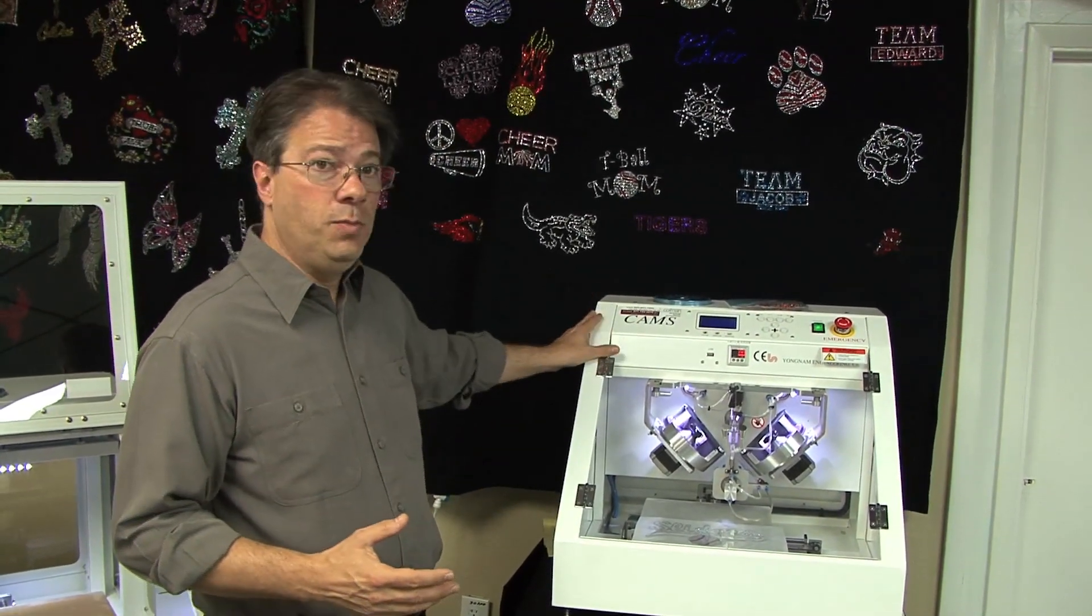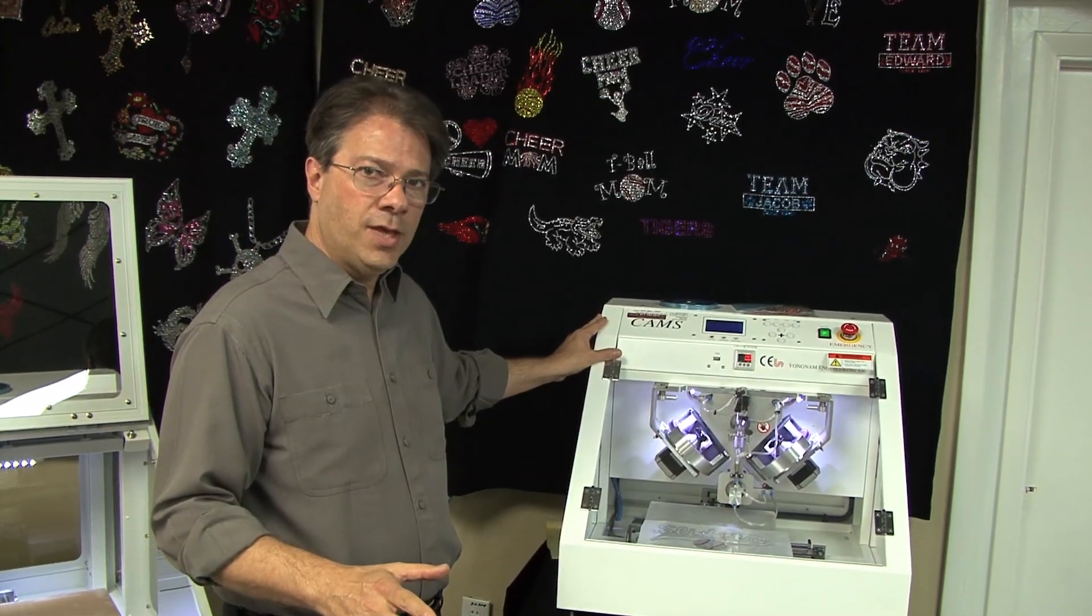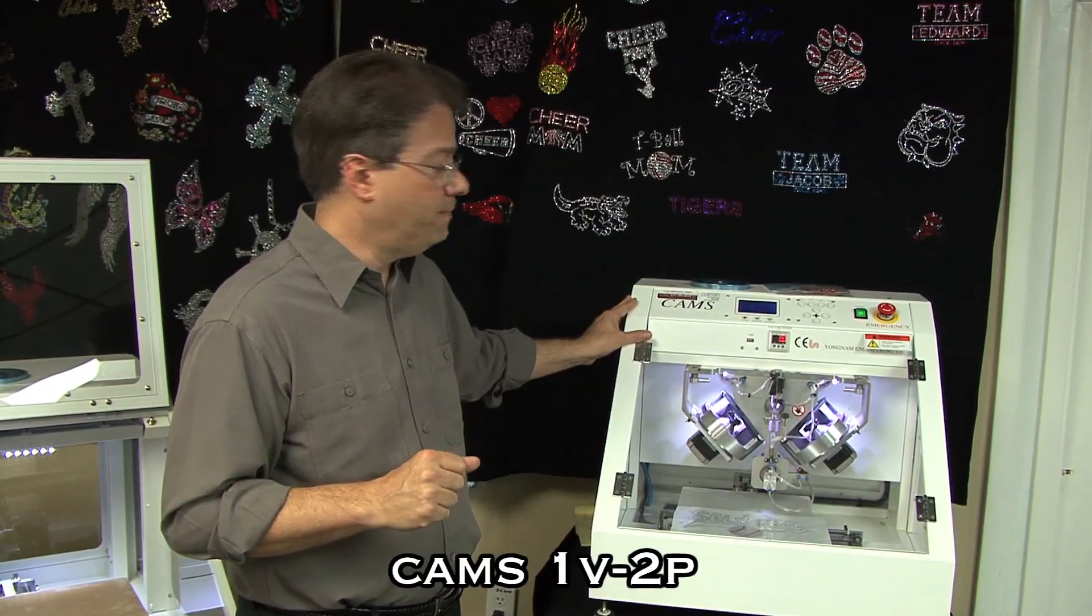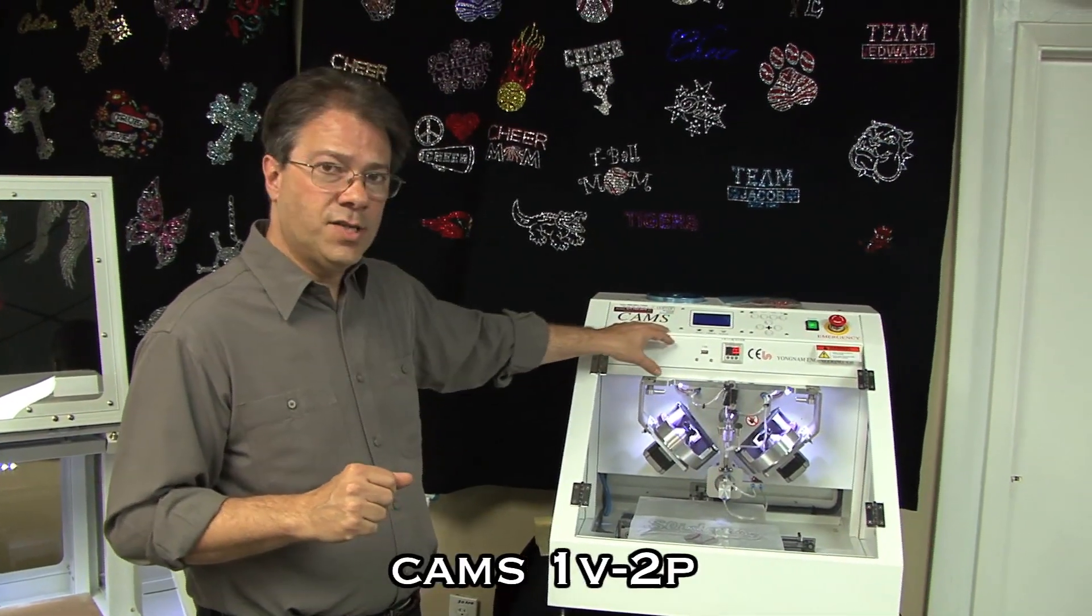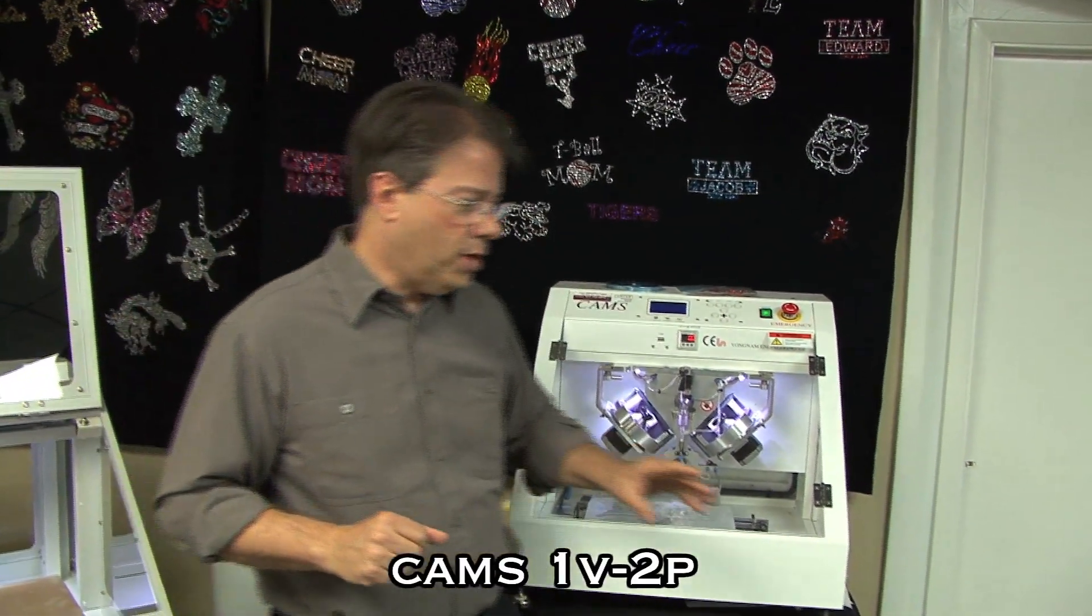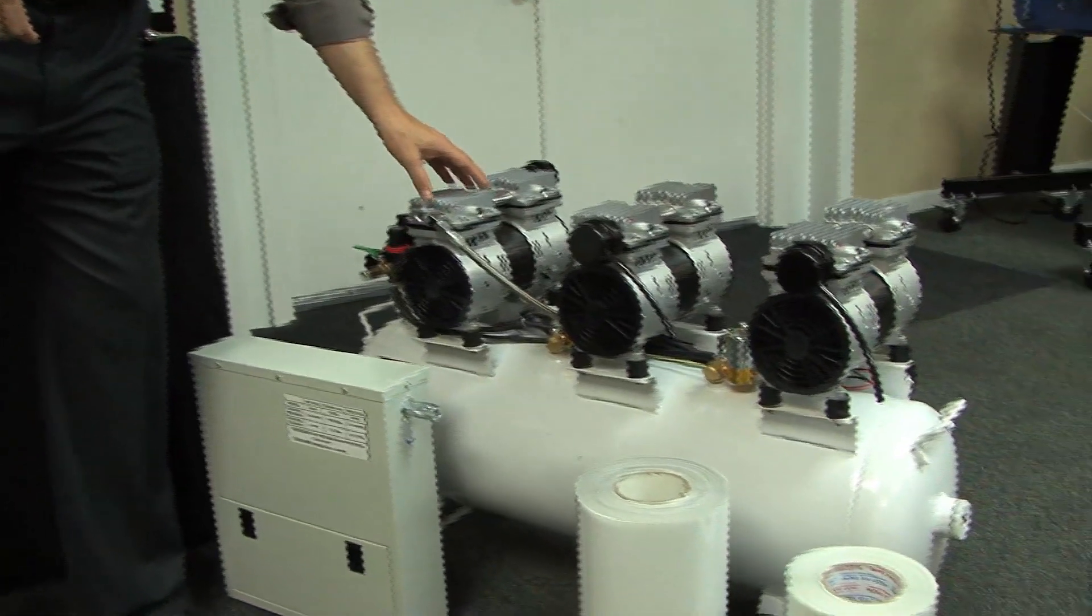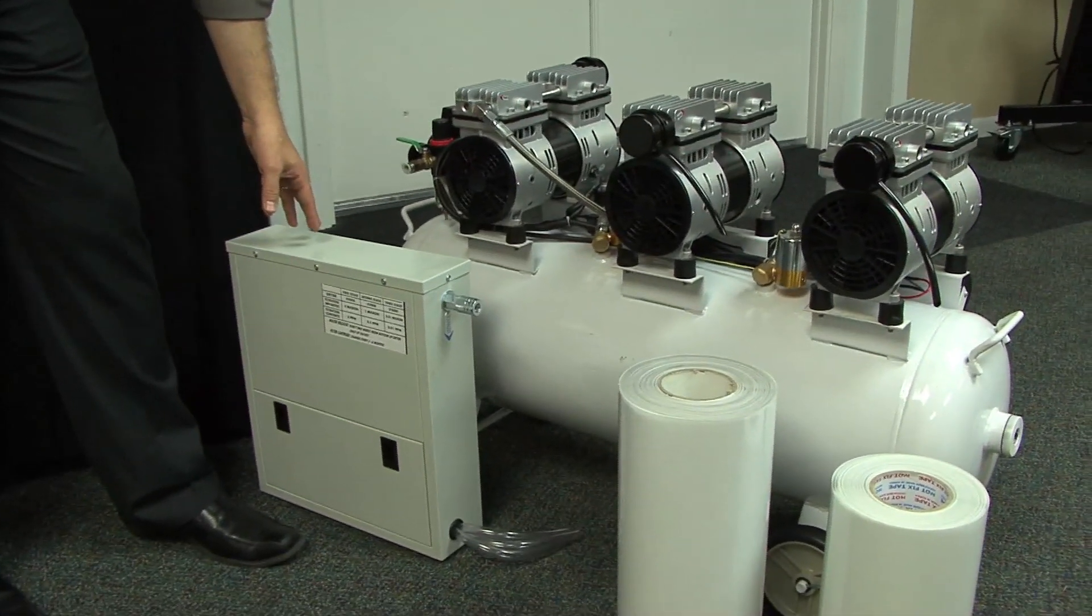We're going to start with the 1v2p and the accessories that come with it. There are three primary parts to an automatic rhinestone system. One is the unit itself, the second part is the air compressor, and the third part is basically an air dryer.